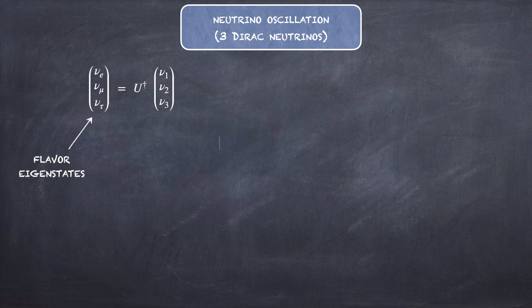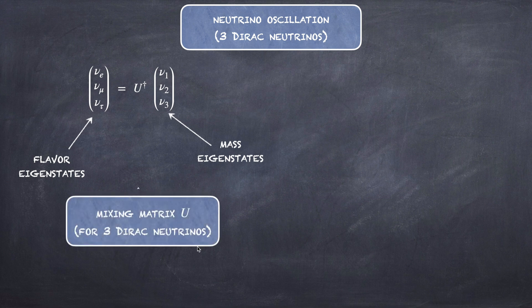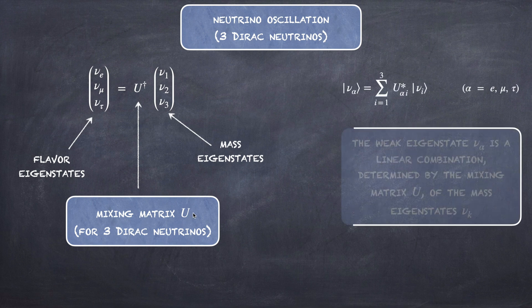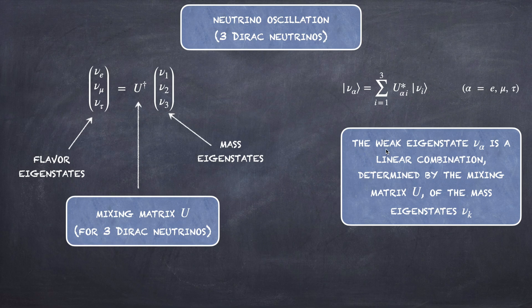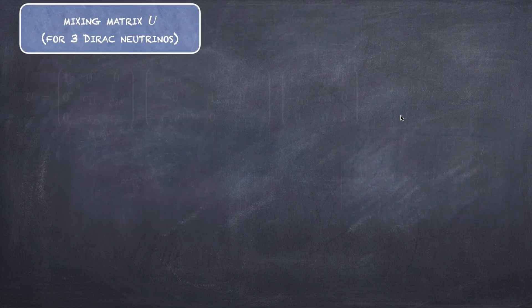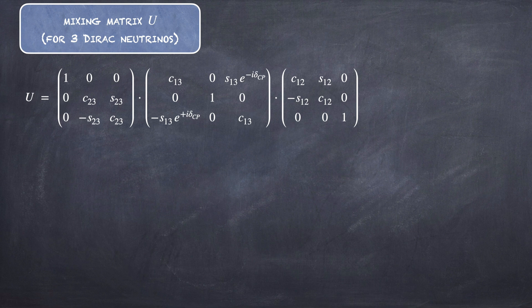Briefly, in the neutrino oscillation model there are two neutrino bases: for the flavor eigenstates and for the mass eigenstates, and a unitary mixing matrix U. In other words, the flavor eigenstate ν_α is a linear combination of the mass eigenstates ν_i, and this combination is determined by the mixing matrix U.